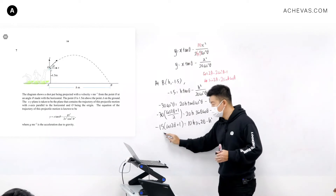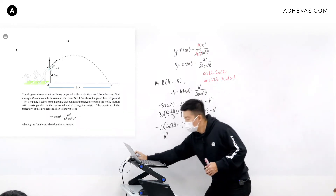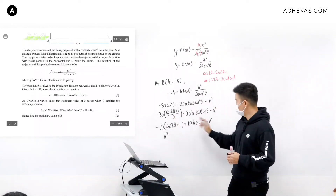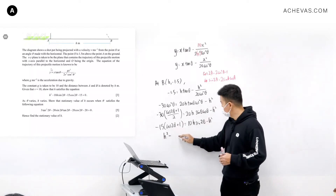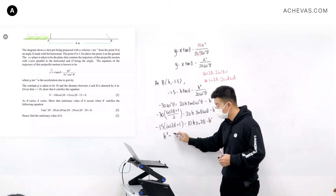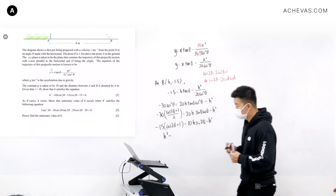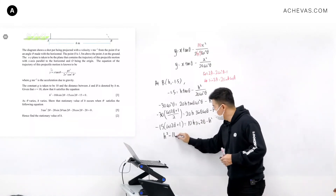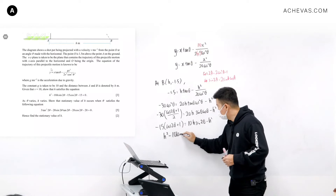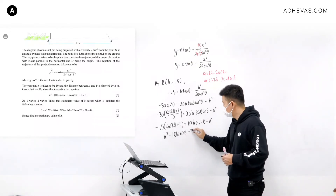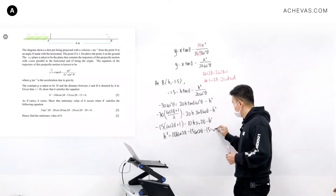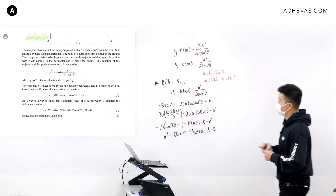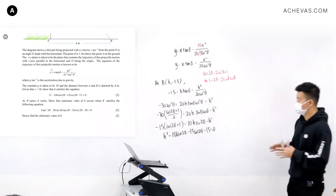I'm going to bring everything to the left-hand side. Now we have H squared minus 10H sin 2theta minus 15 cos 2theta minus 15, equals 0. I've shown what I'm supposed to show. Done.